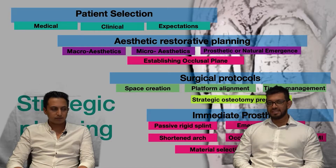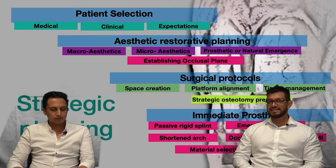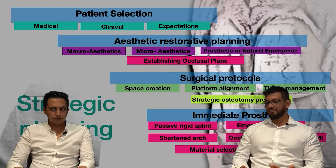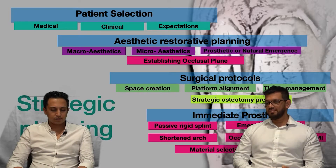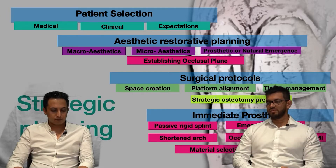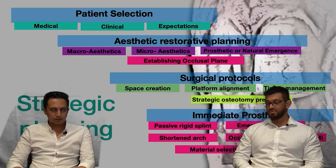Looking at your material selection, the strength and the integrity of this material to withstand function is critical. These patients have come from either terminal dentition or parafunctional habits and are now going into an unforgiving environment of implantology. Parachutes are needed to protect these implants.